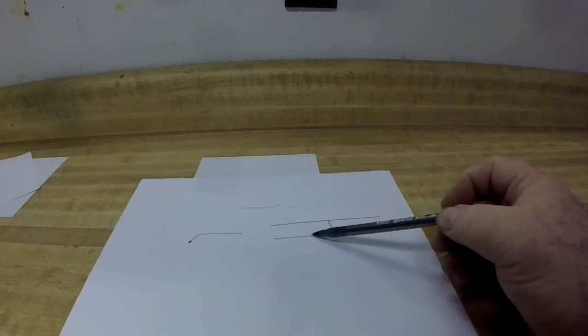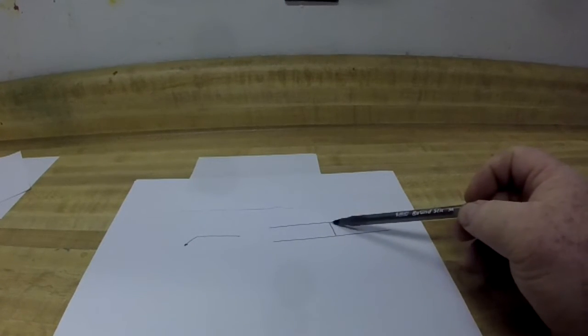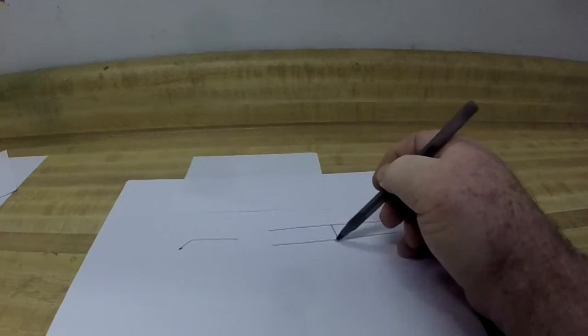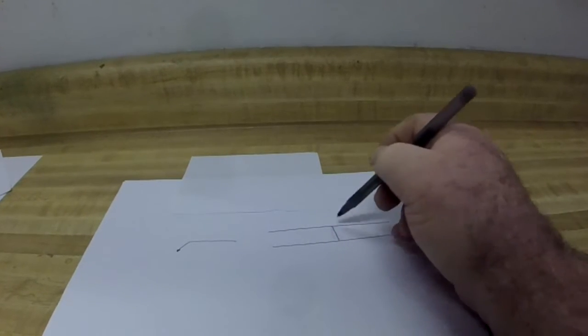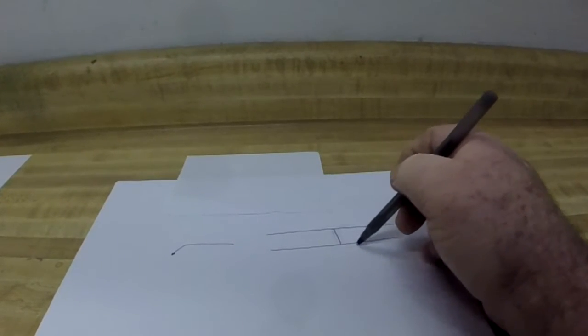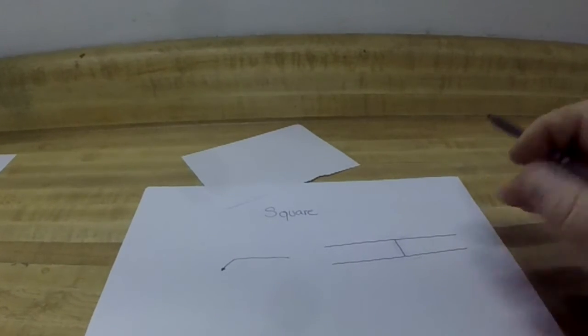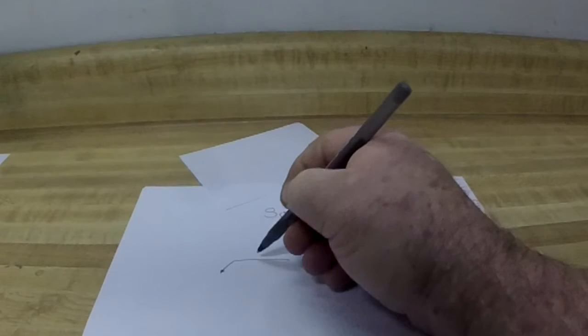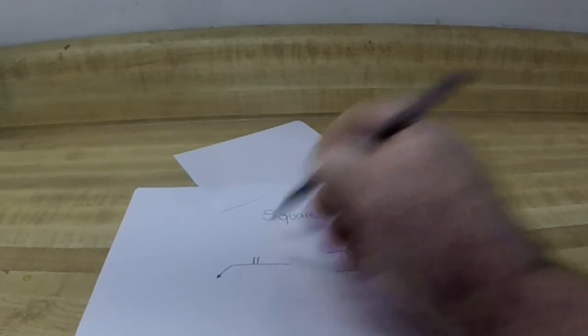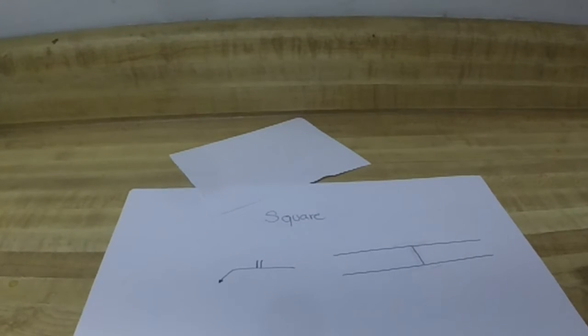Next up is this type of joint. We have two members that are parallel to each other—perpendicular—one might even say they were square. This is the square joint, and the symbol for the square joint is that. Again, pretty simple.